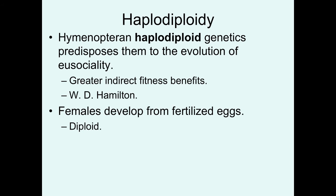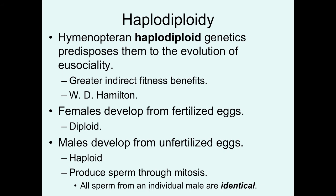In haplodiploidy, females develop from fertilized eggs — they are diploid. Where it gets more complicated is that males develop from unfertilized eggs; males are haploid and only have half the amount of DNA that females do. Therefore, when it comes time to produce sperm through spermatogenesis, their cells don't have to go through meiosis — they simply produce sperm through mitosis. As a result, all sperm from an individual male are going to be genetically identical to each other, which has huge consequences for Hymenopteran relatedness.